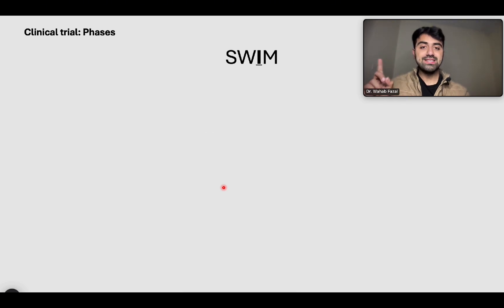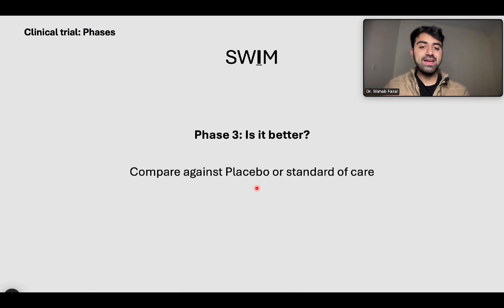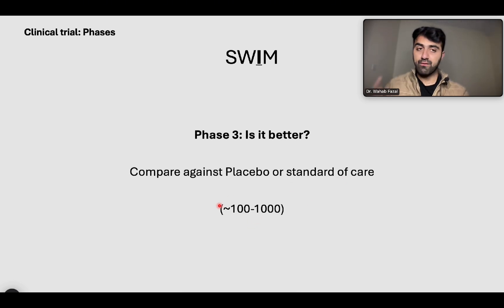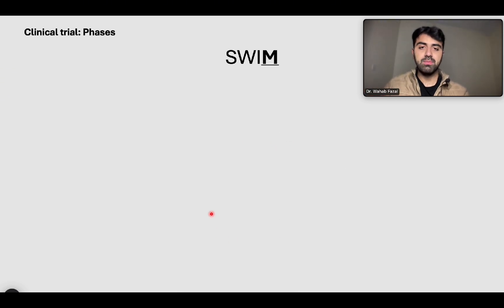Phase three is where we actually compare the drug to our standard of care. In phase three, you compare against a placebo or a standard of care and you recruit a slightly larger number of people — around 100 to 1,000. Phase one was 15 to 30 people, phase two does it work, phase three is it better, with a slightly larger number.